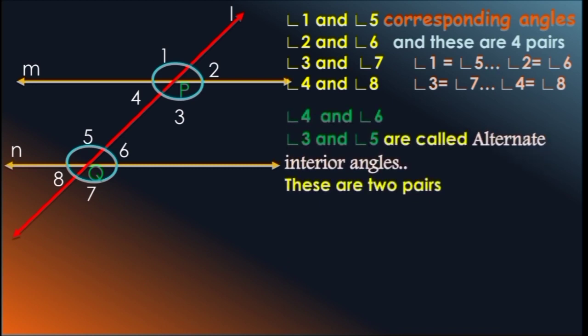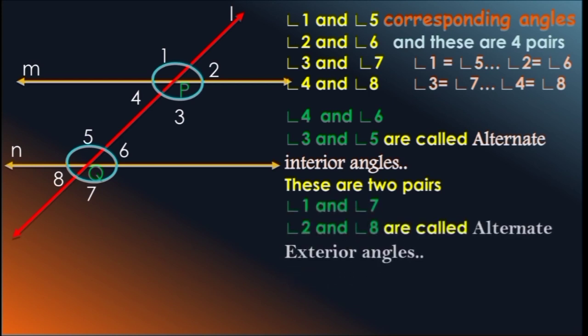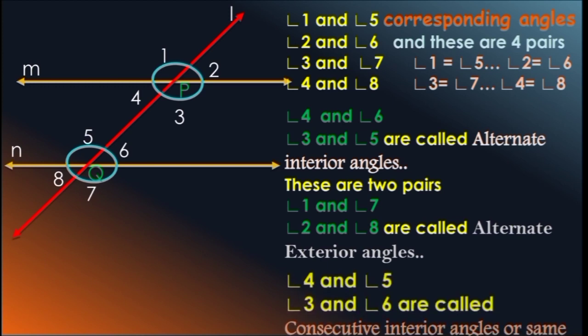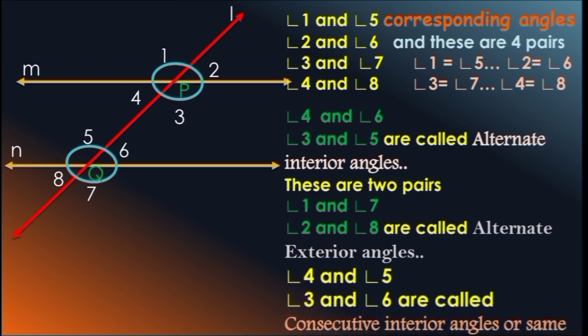Now observe Angle 4 and Angle 6, and Angle 3 and Angle 5 — they are on both sides and interior. These two pairs are called alternate interior angles. There are also alternate exterior angles: Angle 1 and Angle 7, and Angle 2 and Angle 8 — both are exterior angles. These pairs are called alternate exterior angles.